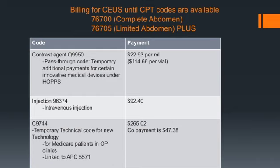Q9950, the contrast agent code, is a pass-through code and reimburses at $22.93 per mL, or $114.66 per vial at 5 mL per vial. The intravenous injection code 96374 reimburses at $92.40, while C9744, the new technology C-code, reimburses at $265.02 with a co-payment of $47.38.